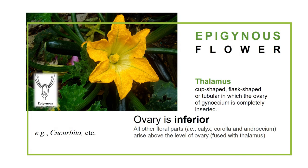Next we will discuss the epigynous flower. In this, the thalamus is cup-shaped, flask-shaped, or tubular, in which the gynoecium is completely inserted inside the floral appendages. The main point to remember is that the ovary is inferior and the other floral parts arise above the level of the ovary. From the picture you can see how an epigynous flower looks.